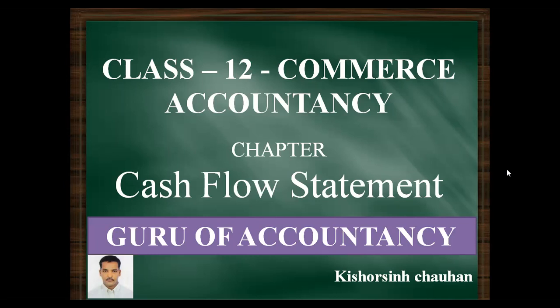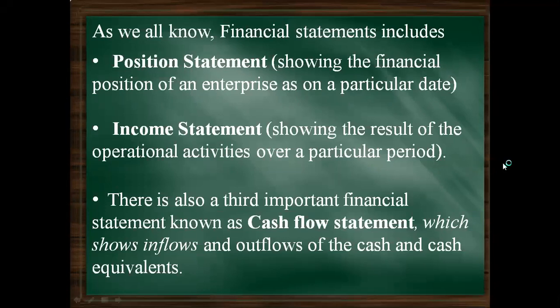Students, there are two financial statements. One is the Position Statement — that is the Balance Sheet — which gives information about assets and liabilities of the business at the end of the year. The second is the Income Statement, that is the Statement of Profit and Loss, which gives information about the financial result — profit or loss. There is one more statement: the Cash Flow Statement, which gives information about inflow and outflow of cash and cash equivalents.